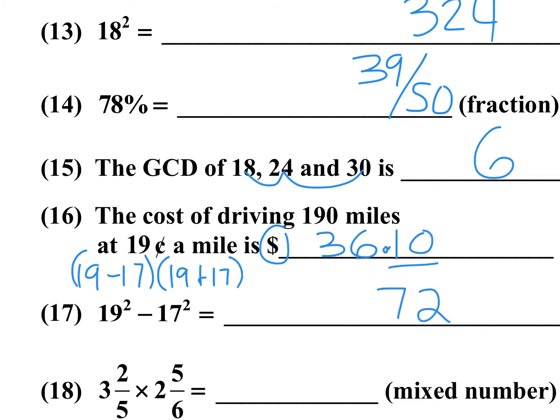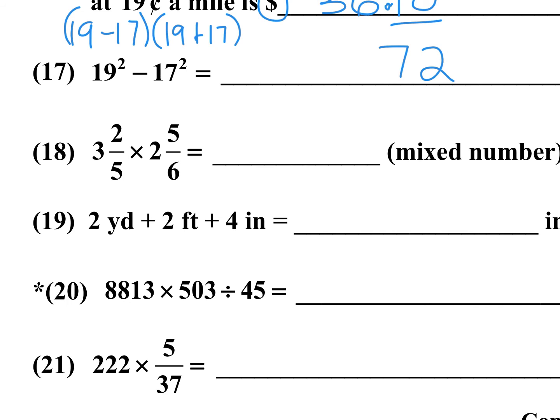Number 18: 3 and 2-fifths times 2 and 5-sixths, answer as a mixed number. Convert: 3 times 5 plus 2 is 17 over 5; 6 times 2 plus 5 is 17 over 6. So 17 times 17 is 289 over 30. 30 times 9 is 270, so it goes 9 times with remainder 19. The answer is 9 and 19/30.